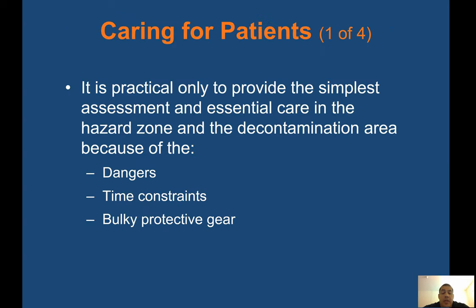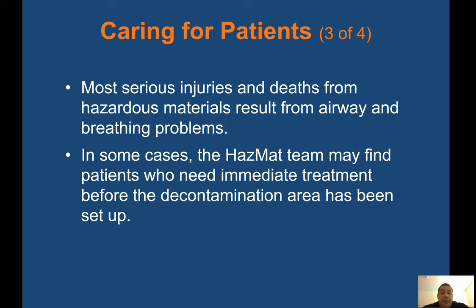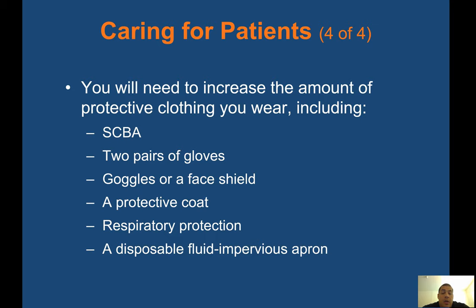Caring for patients is practical only to provide the simplest assessment of essential care in the hazard zone and decontamination area due to dangers, time constraints, and bulky protective gear. Patient care must address two issues: any trauma from related mechanisms such as vehicle collision, fire, or explosion, and injury or harm resulting from exposure to a toxic hazardous substance. Most serious injuries and deaths from hazardous materials result from airway and breathing problems. If immediate treatment is needed before the decontamination area is set up, you will need SCBA, two pairs of gloves, goggles or a face shield, a protective coat, respiratory protection, and a disposable fluid and vapor-permeable apron.